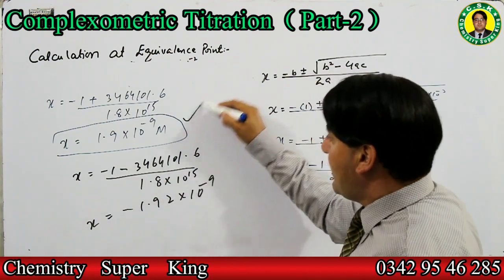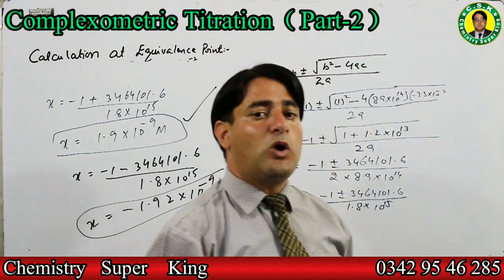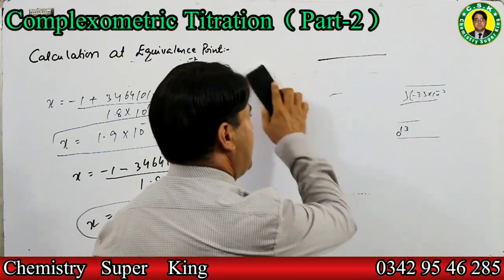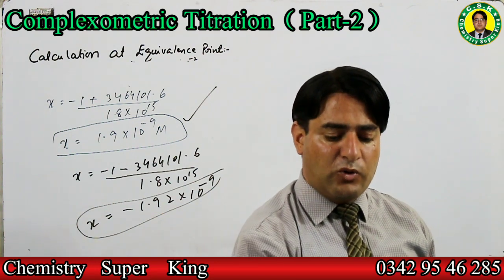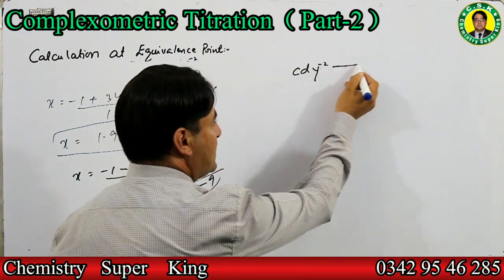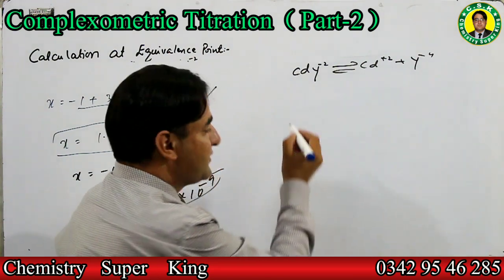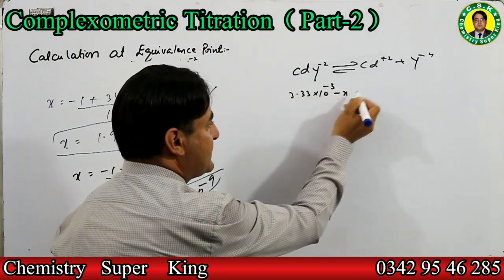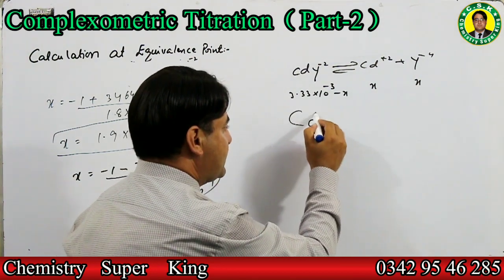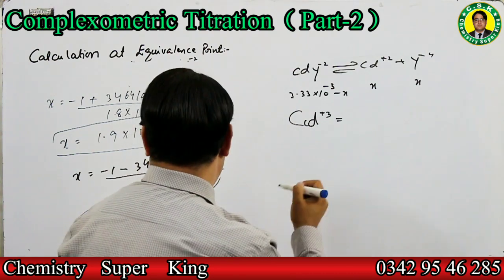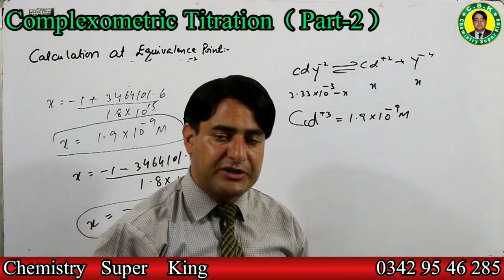Minus concentration کی کوئی meaning نہیں بنتی، اس لیے x = 1.9×10⁻⁹ molar ہی correct value ہے۔ اس طرح quadratic equation apply کرتے ہوئے ہم نے x کی value find کر لی۔ Equilibrium concentration: CdY²⁻ = 3.33×10⁻³ − x، cadmium ion = x = 1.9×10⁻⁹ molar۔